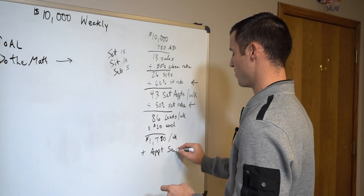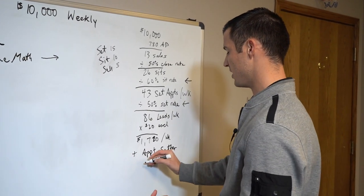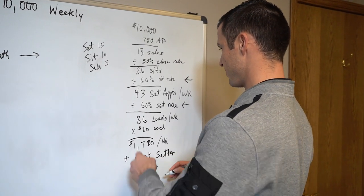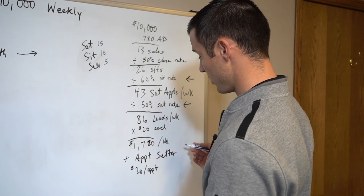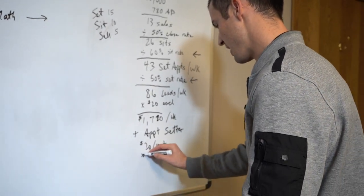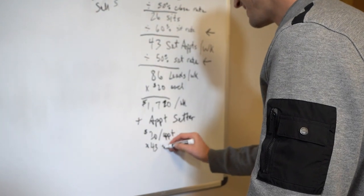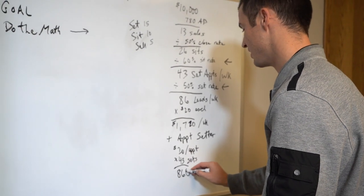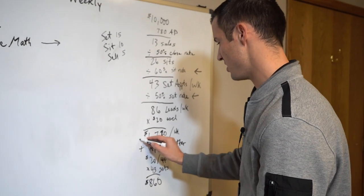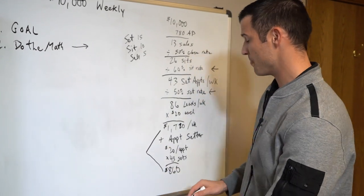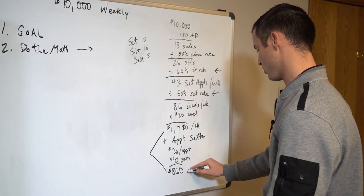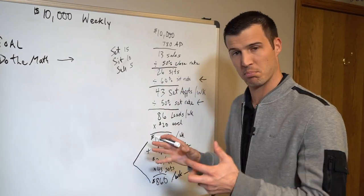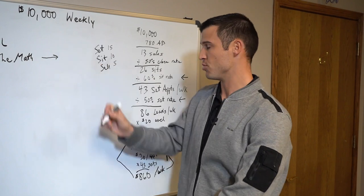Now you got to decide if you need an appointment setter because if you pay 20 bucks per appointment that they set and they set 43, then you got to do that math and take that times 43 sets, which is $860. So not only are you at $1,720 but you've also got to add in $860 per week to pay the appointment setter. I don't know how else to break this down any easier but these are real numbers, are legit and you can in fact make ten thousand dollars.